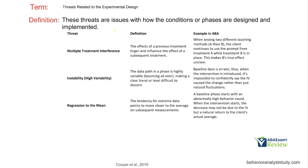Finally, threats related to experimental design — how the conditions or phases are designed and implemented. Multiple treatment interference: the effects of a previous treatment linger and influence the effect of a subsequent treatment. For example, when testing two different teaching methods A and B, the client continues to use the prompt from treatment A while treatment B is still in place.